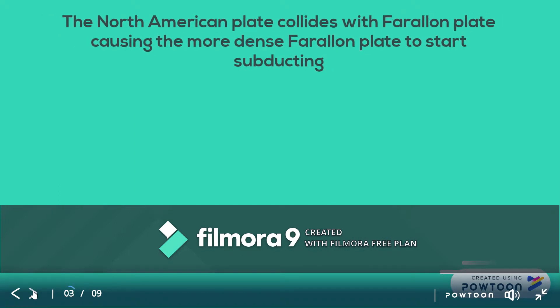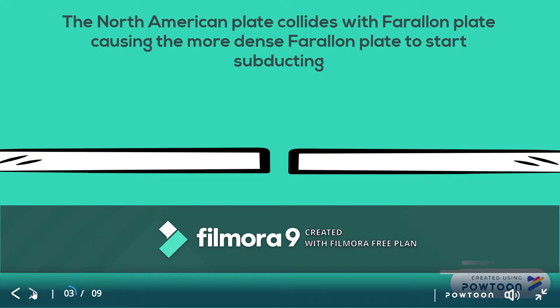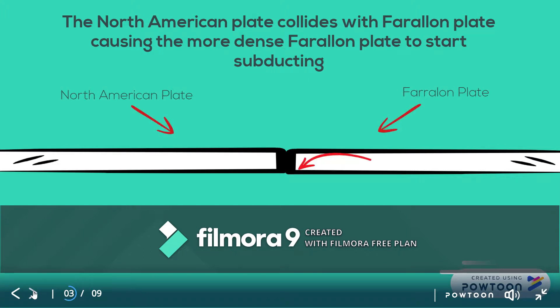As the North American Plate moved west, it encountered the Farallon Plate. As the two collided, the denser Farallon Plate subducted underneath the North American Plate.